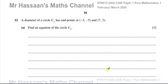Welcome back, this is Mr. Hassan from Mass Channel. This question is number 12, a final question from the February-March 2020 International A-Level Cambridge 9709 paper 1, which is a pure mathematics paper. The question is about the equation of circles, and we're given that a diameter of circle C1 has endpoints at negative 3, negative 5 and 7, 3.